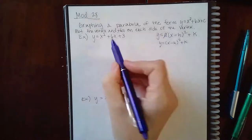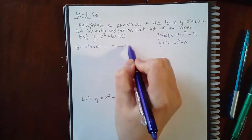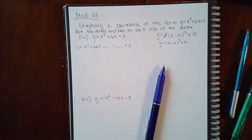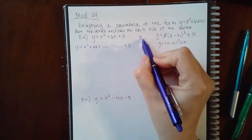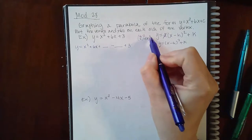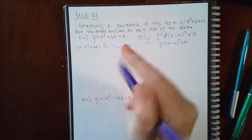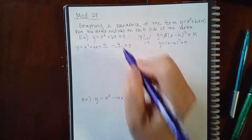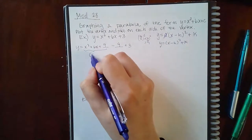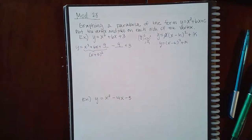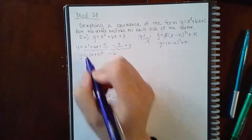The first way is to take the right-hand side and complete the square. You take half of positive six and square it, which gives positive three squared, which is nine. To complete the square you add nine, but to avoid changing the value of the expression, you also subtract nine. This part gives x plus three, all squared.